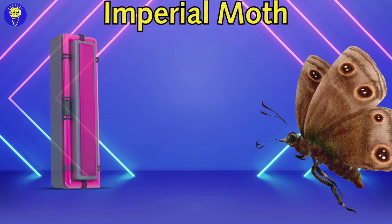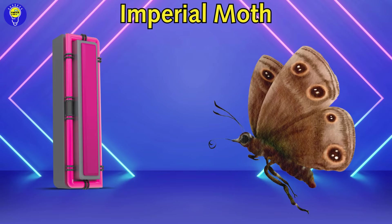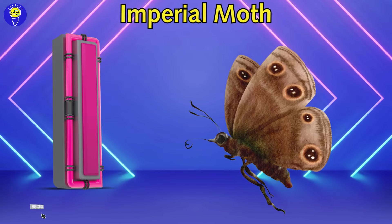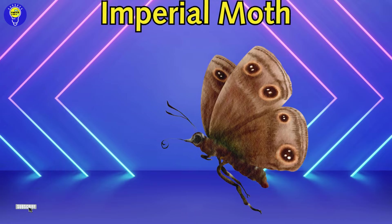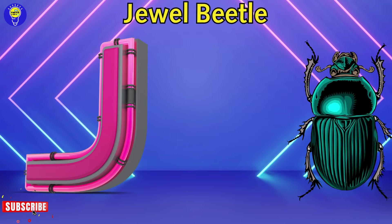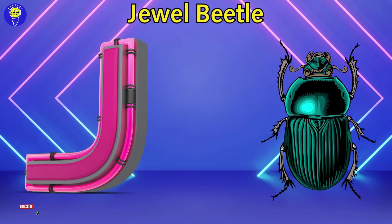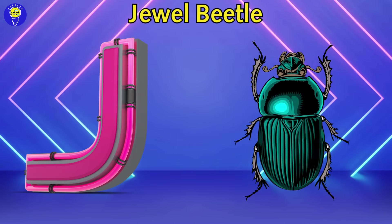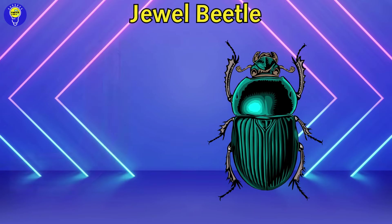I is for imperial moth. i, imperial moth. J is for jewel beetle. j, jewel beetle.